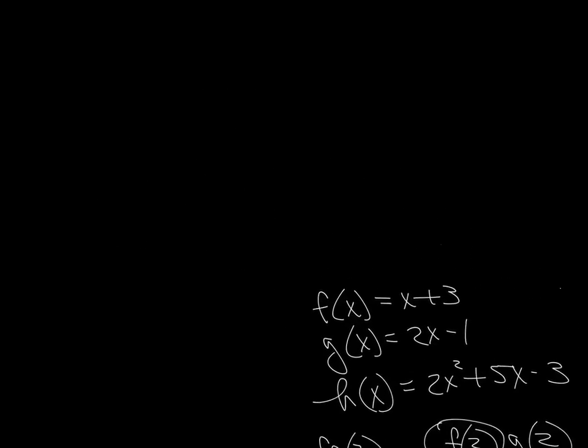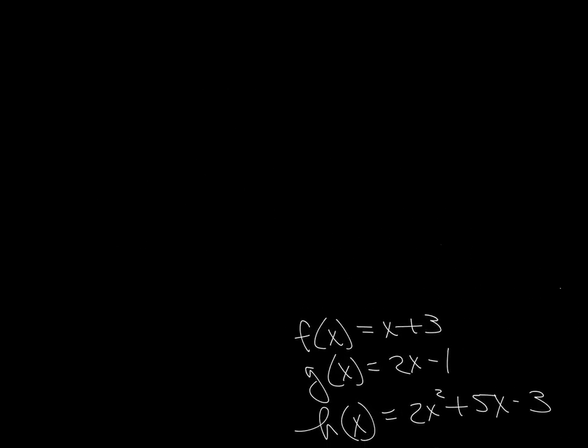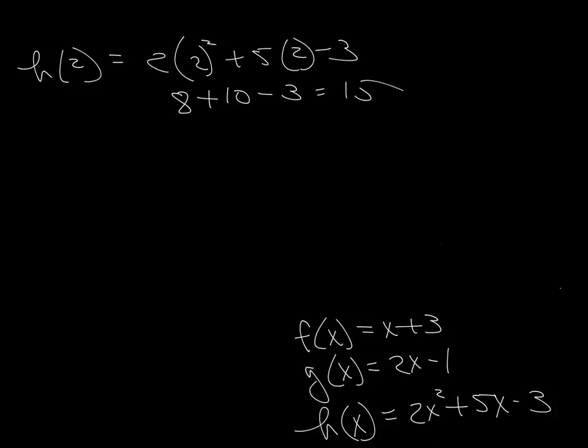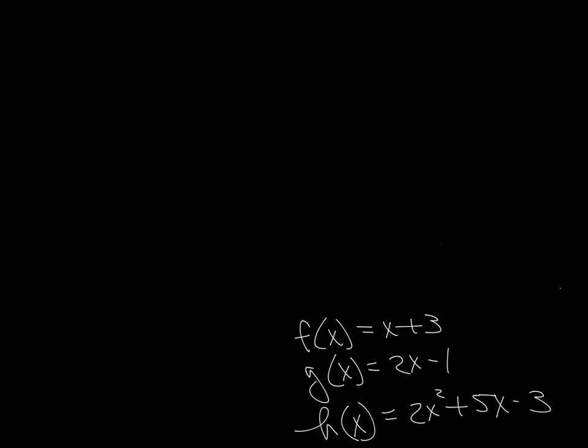The other thing they want us to do is find H of 2. So we just look at the bottom equation and we put a 2 wherever we see the x. So we've got 2 times 2 squared plus 5 times 2 minus 3, which is 8 plus 10 minus 3 equals 15. So H of 2 equals 15.